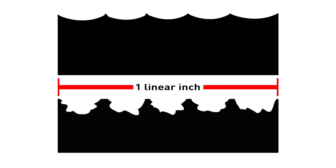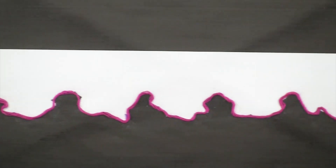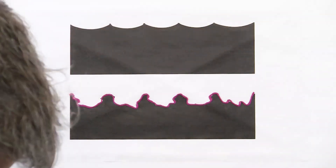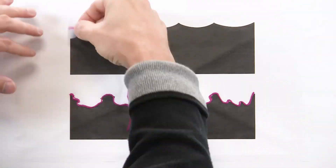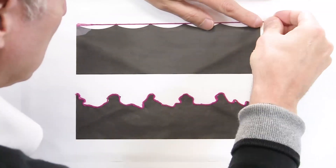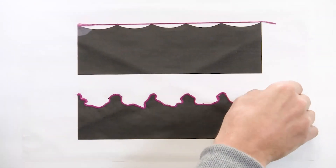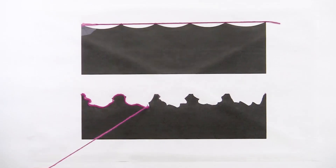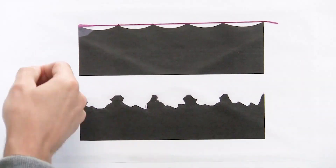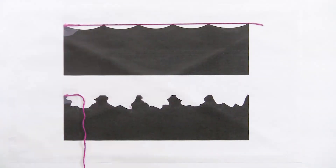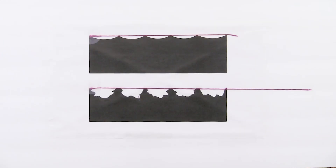This graphic represents two magnified surfaces, each one linear inch. The upper represents a rounded profile, the second an angular profile. If we were to measure the available surface area for chemical adhesion, we'd easily see the angular profile offers significantly more surface area for chemical adhesion.